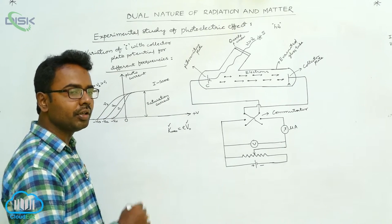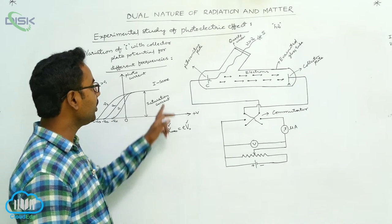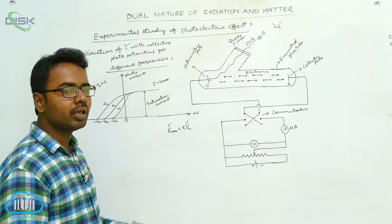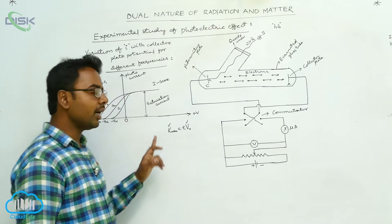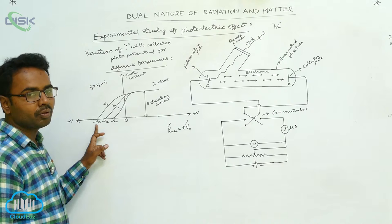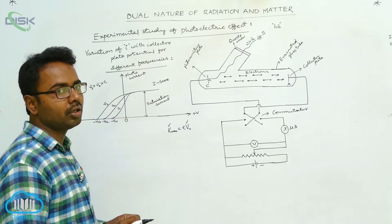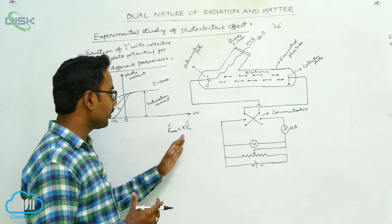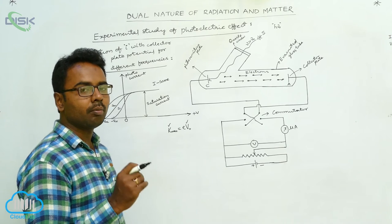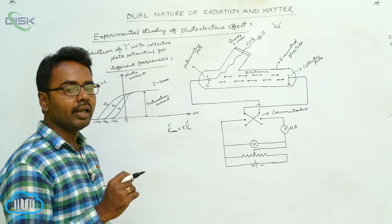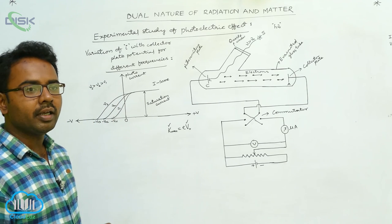In the same way, as we increase the frequency again to nu3 — where nu2 is greater than nu1 and nu3 is greater than nu2 — keeping intensity the same, the energy of photons increases, the maximum kinetic energy of electrons released increases, and so the stopping potential also increases to V0-3. From this it is clear that the stopping potential depends only on the frequency of the incident radiation and does not depend on the intensity. Both the maximum kinetic energy of the electrons and the stopping potential depend only on the frequency of the incident radiation.